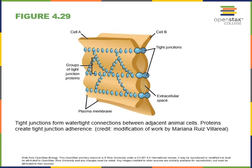Tight junctions are a type of intercellular junction where two cells are held together, forming an impermeable barrier. There are interlocking proteins that encircle the cells and prevent chemicals from moving through the space between the two cells.